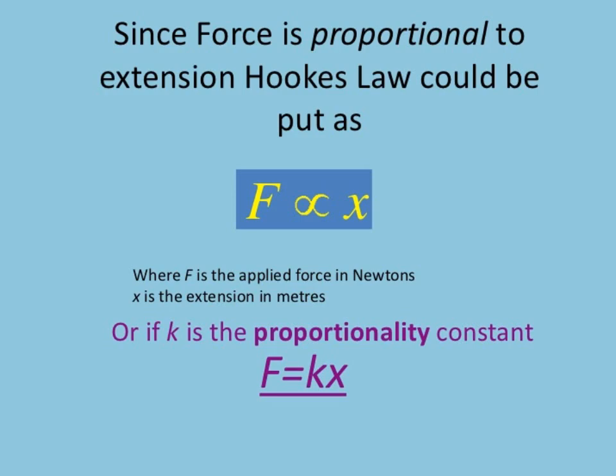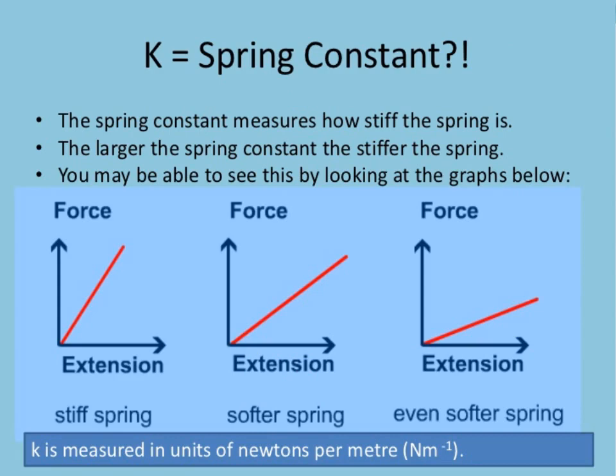Removing the proportionality sign gives F = kx, where k is the spring constant. The spring constant measures how stiff the spring is — the larger k is, the stiffer the spring. Looking at the graphs, extension is along the x-axis and force is along the y-axis. The first graph has the greatest slope, meaning the greatest value of k. The spring constant k is measured in units of newton per meter.